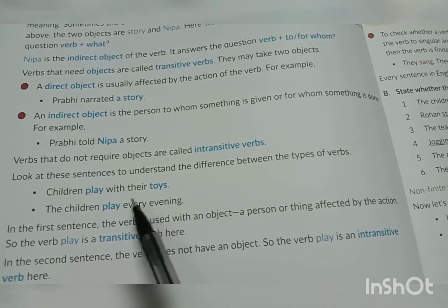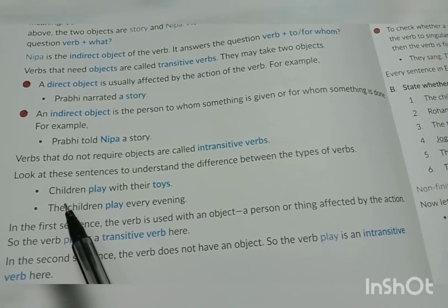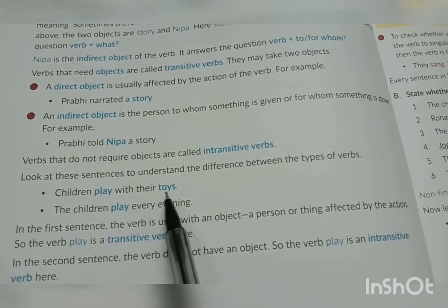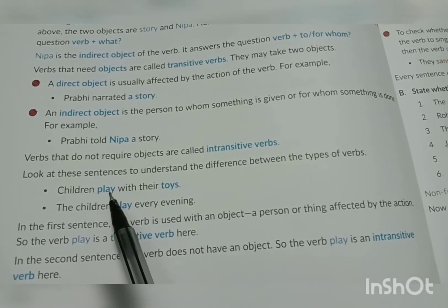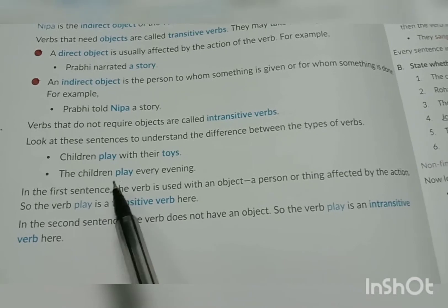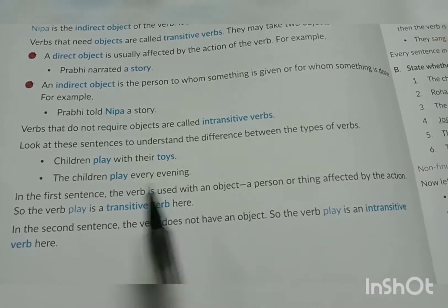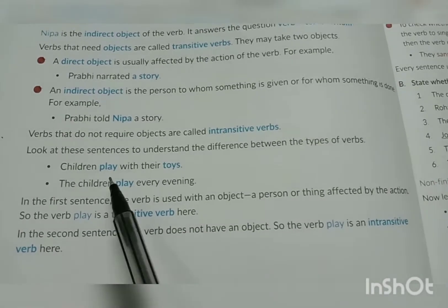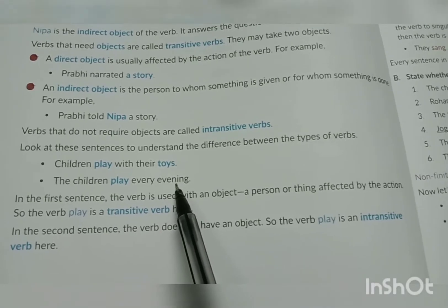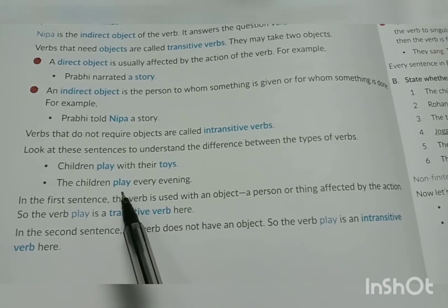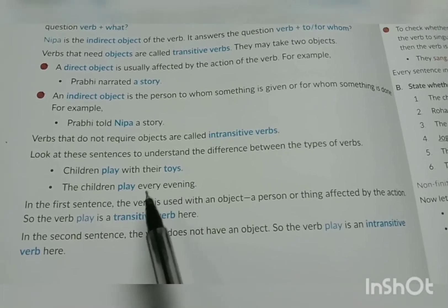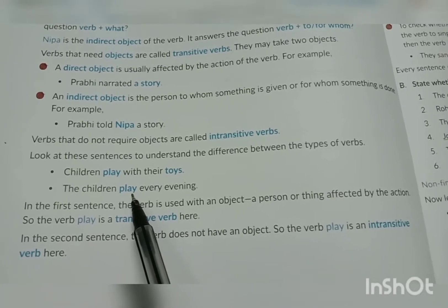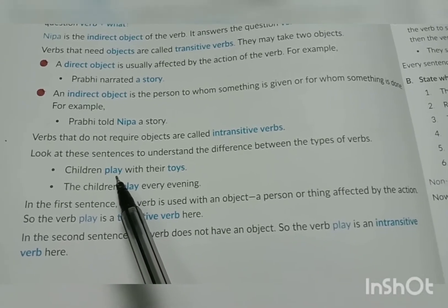जो भी person या thing है वो उस action से affected है क्योंकि toys से children खेल रहे हैं, इसलिए जो 'play' यहाँ पे है वो transitive verb है। Second sentence: 'The children play every evening' — verb का कोई object नहीं है, so the verb 'play' is intransitive here. यहाँ बच्चे खेलते हैं हर शाम — किससे खेल रहे हैं, कोई information नहीं है — इसलिए यहाँ play intransitive है।